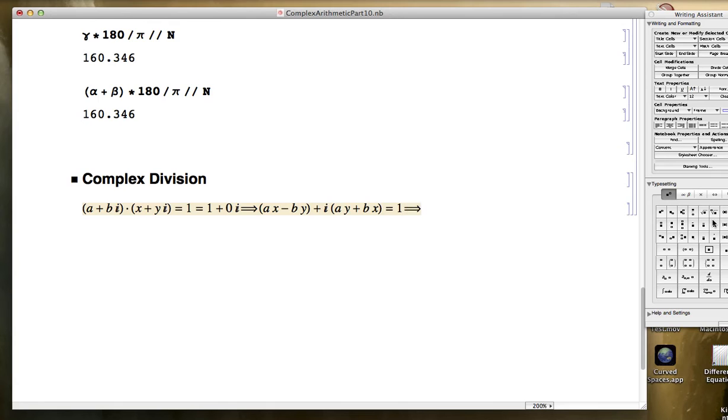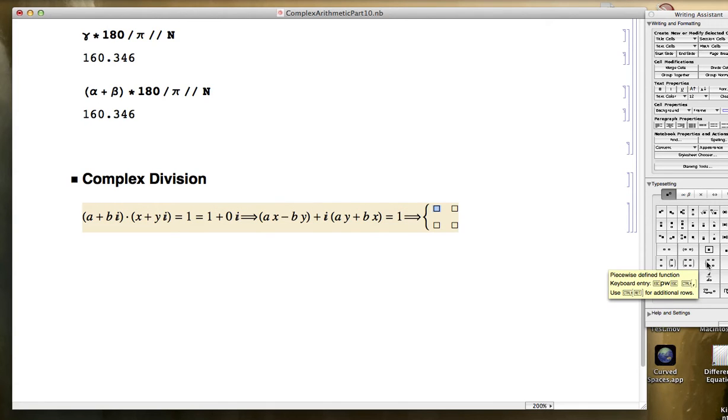And that would have to equal 1 plus 0i. That would result in giving us a system of two linear equations in the unknowns x and y. The first one being ax minus by equals 1. And the second one being, if I were to rearrange, bx plus ay equaling 0.